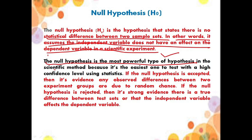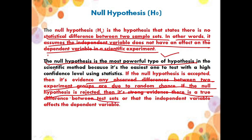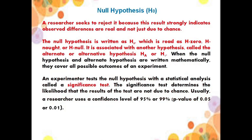Regarding null hypothesis accept and reject: if the null hypothesis is accepted, then it is evidence that any observed differences between the two experimental groups are due to random chance. If the null hypothesis is rejected, then it is strong evidence that there is a true difference between test sets, or that the independent variable affects the dependent variable.